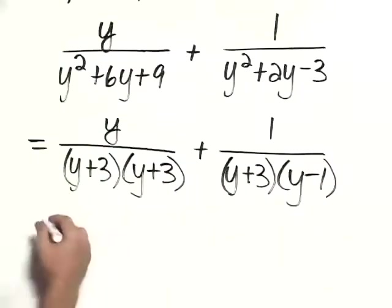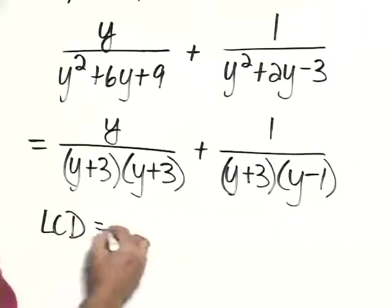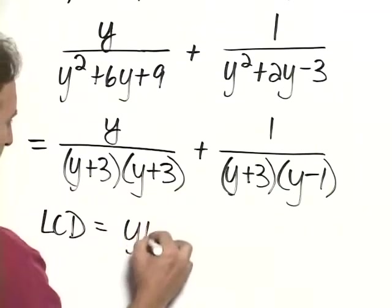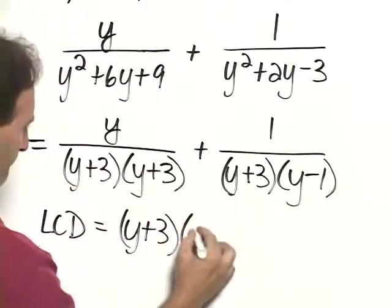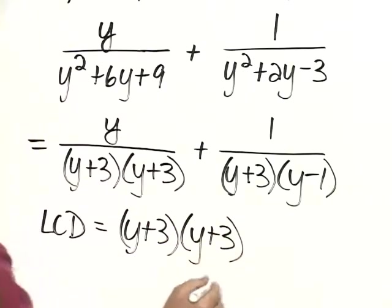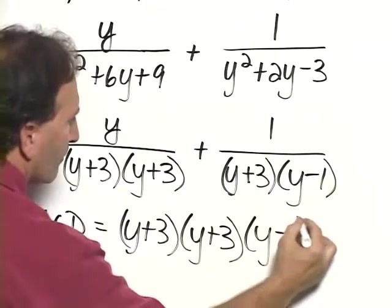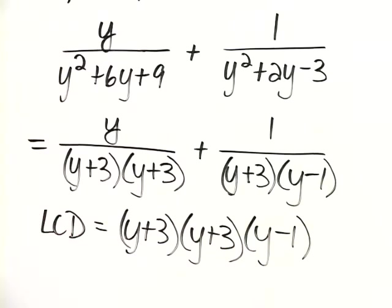And now we can see that the LCD is equal to, we need the y plus 3 times the y plus 3. And now when we go to the second denominator, we already have the y plus 3, but we need the y minus 1, so that's our LCD.